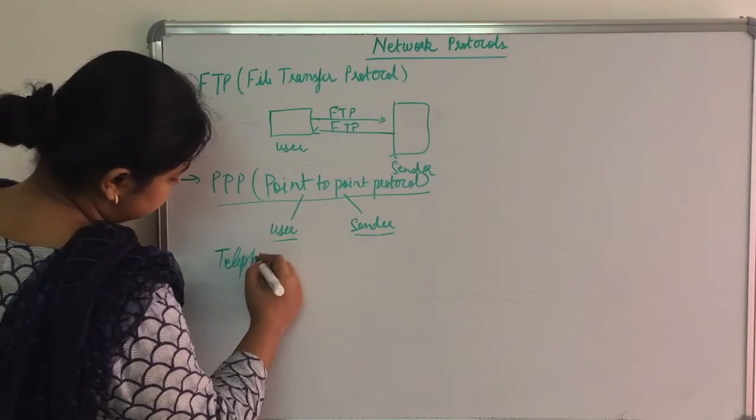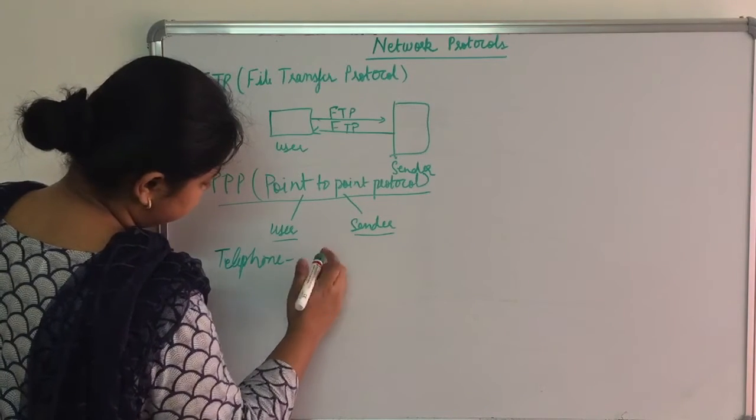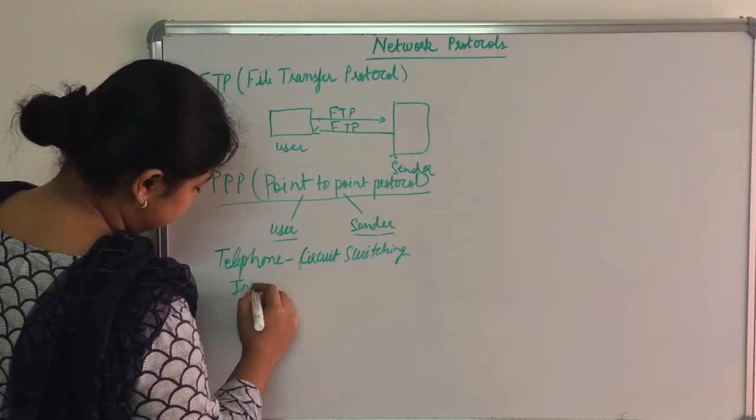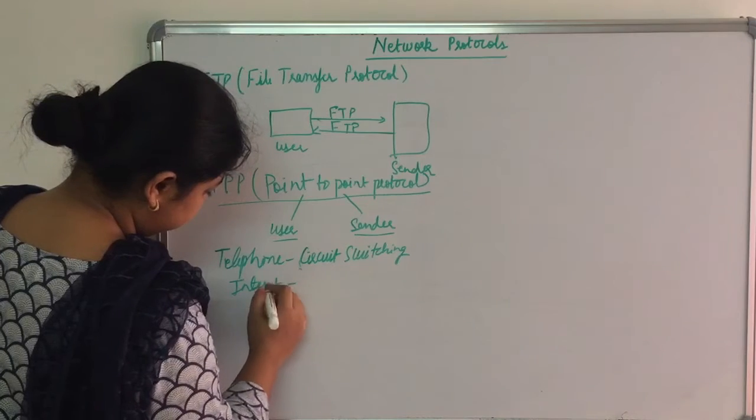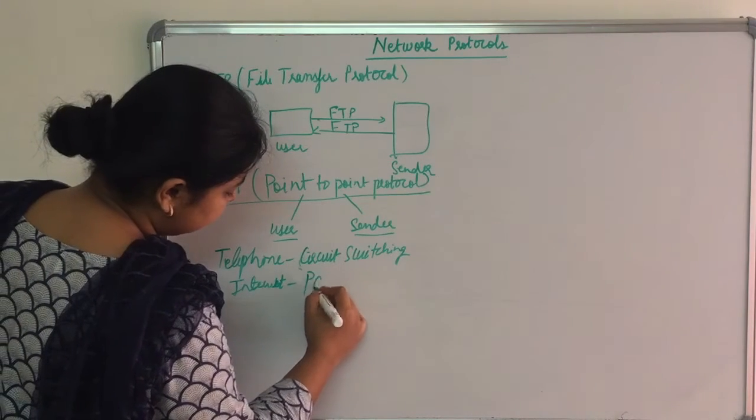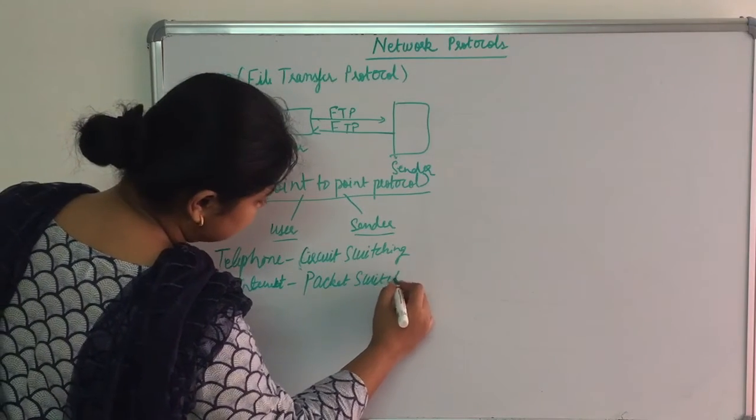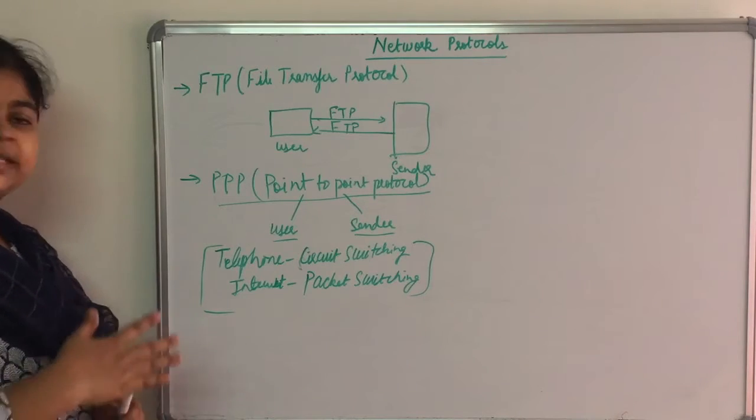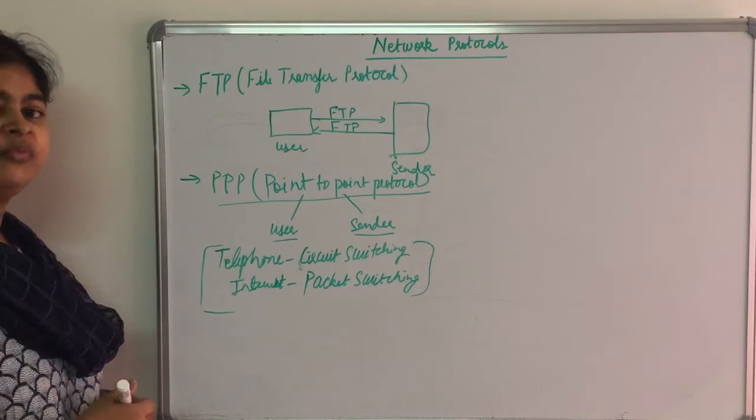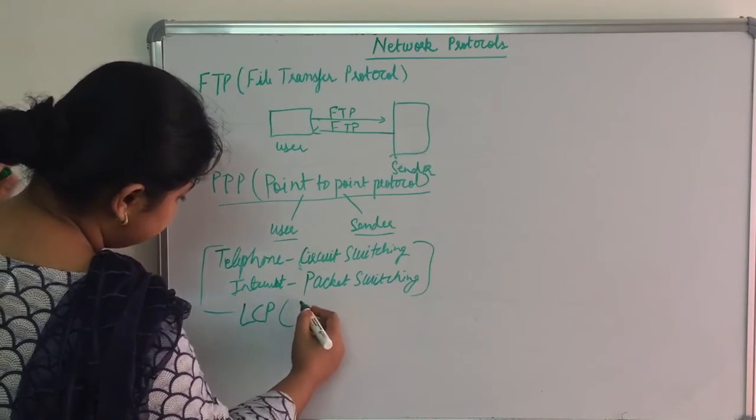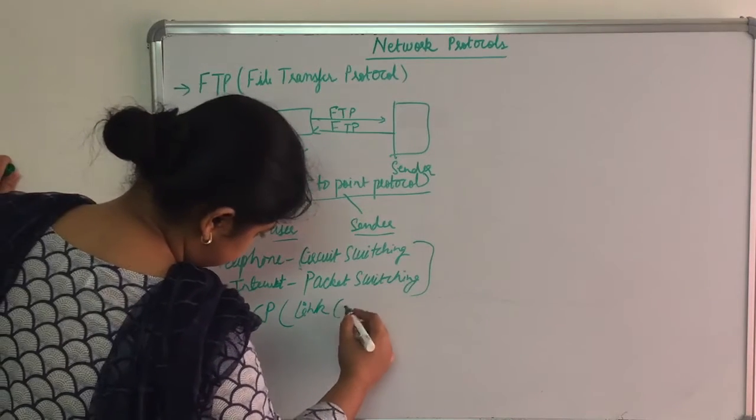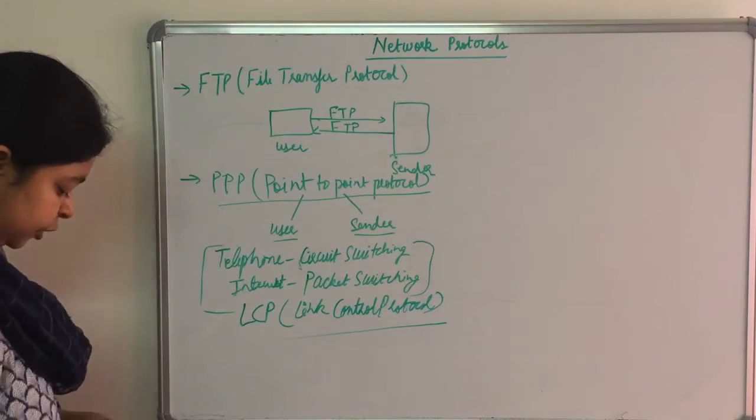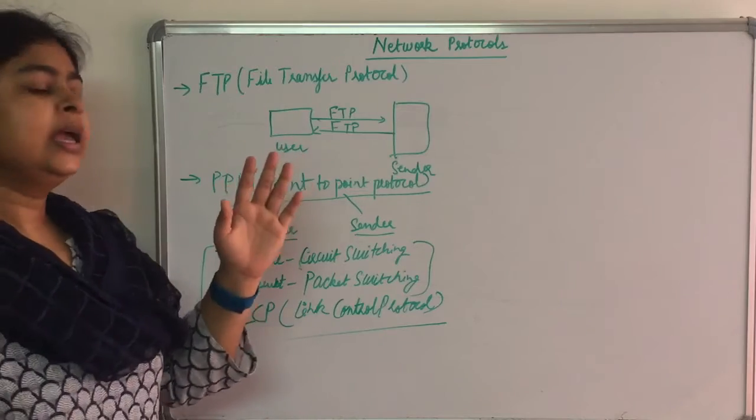Now I have told you that telephone line uses circuit switching but our internet uses packet switching. So in both equilibrium means balance, also through balance work is PPP. How does it use? So first is LCP, Link Control Protocol, to establish a link between sender and receiver, establish link is.